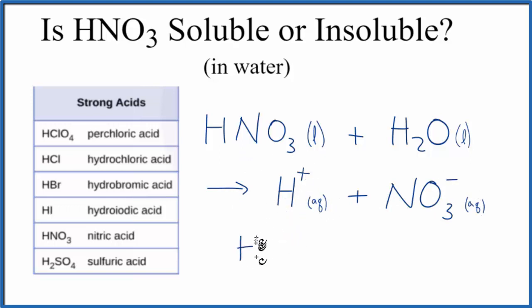You'll also see this H+ here, sometimes it's written as H3O+. That's called the hydronium ion. That's because the H+ joins with the water and forms H3O+.